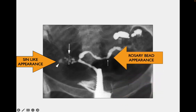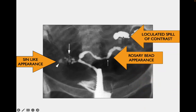Here you can also see the rosary bead appearance. This rosary bead appearance occurs because the tube alternately gets dilated and constricted. You can see constriction here and dilation here, so when contrast goes into the tube, the alternate constriction and dilation gives the appearance of a rosary bead.